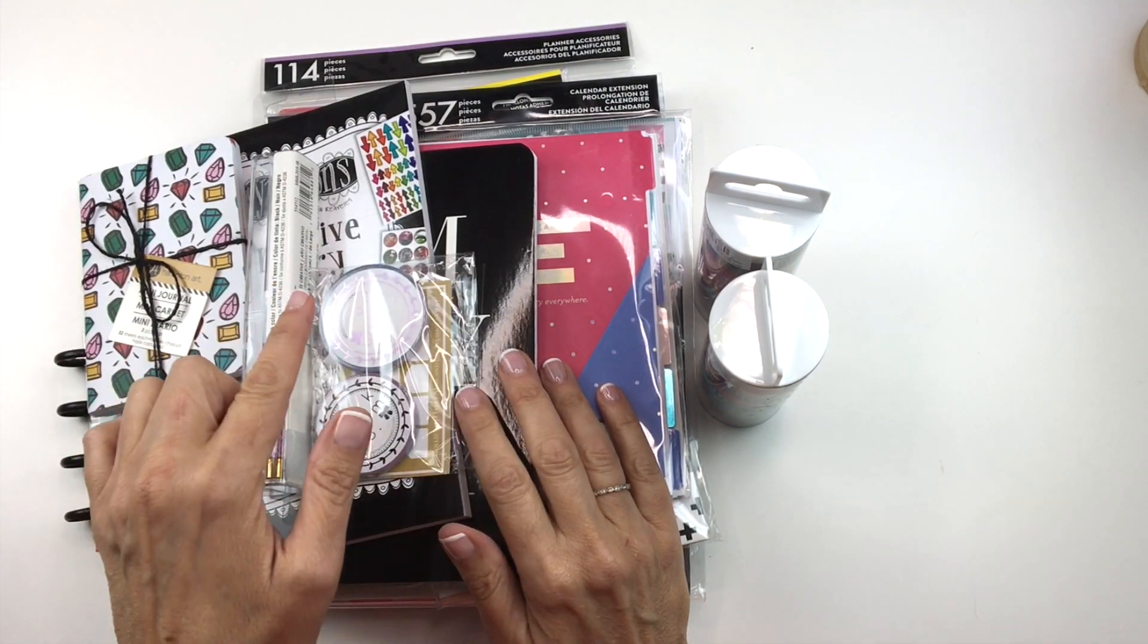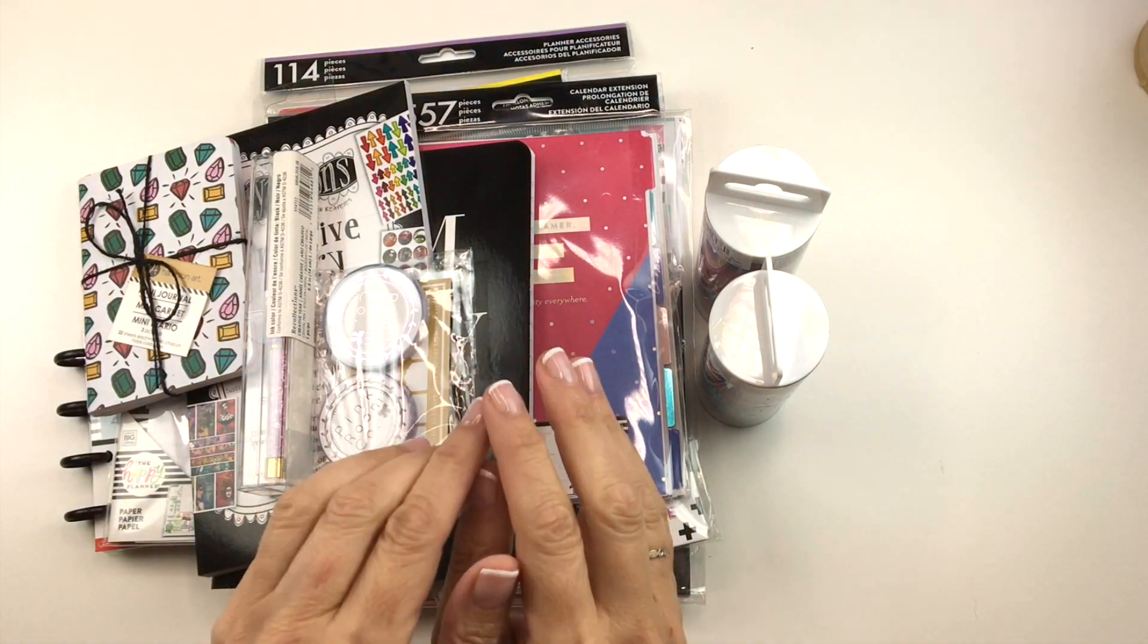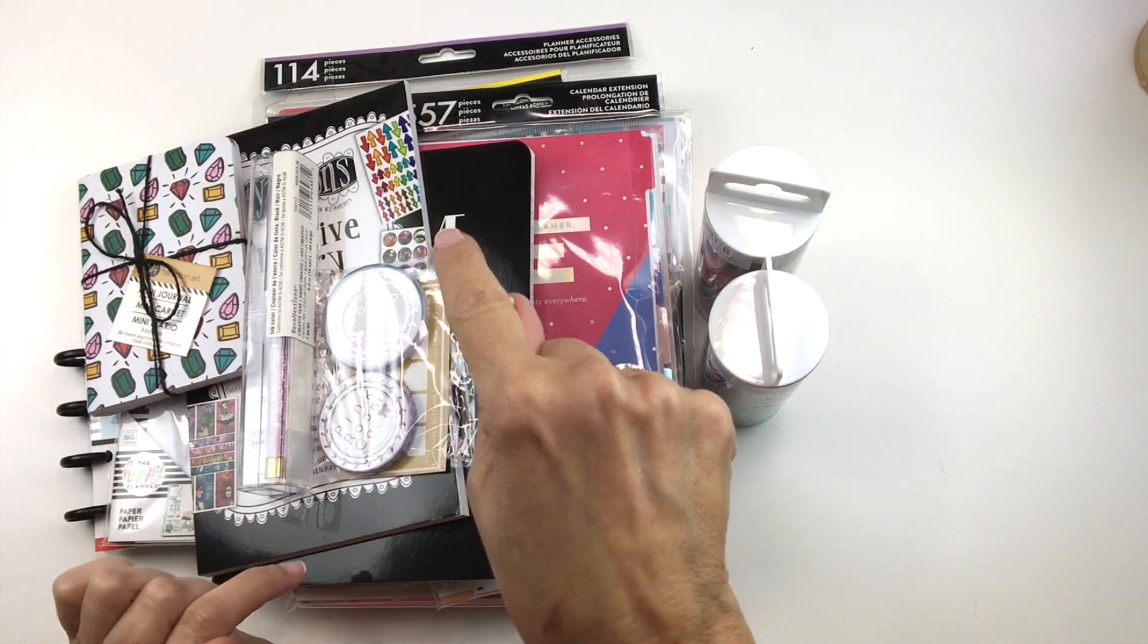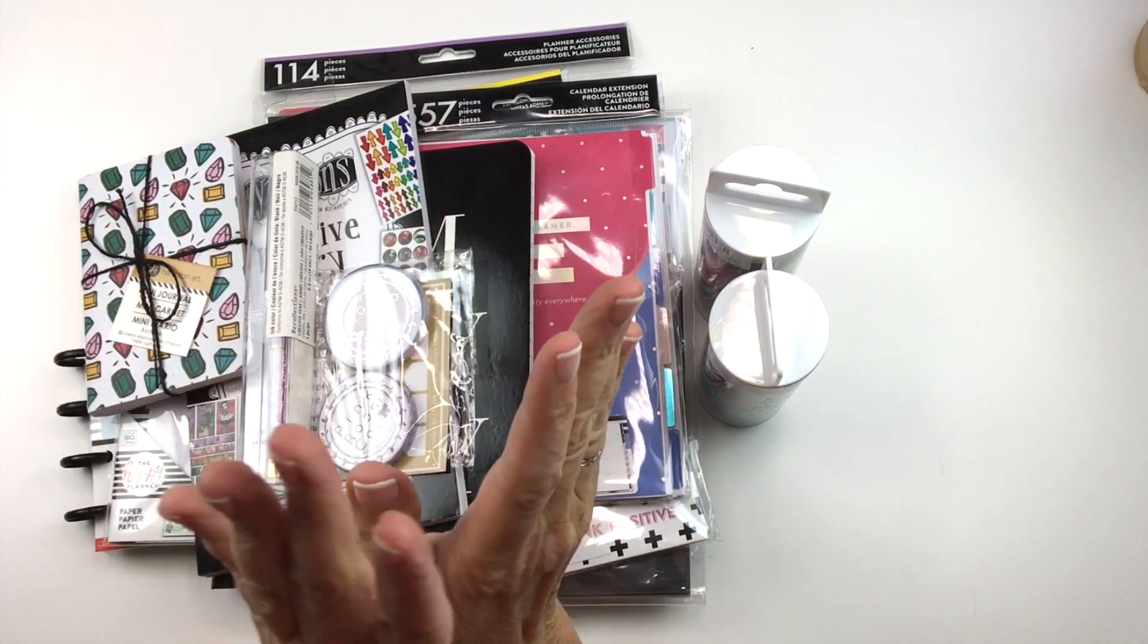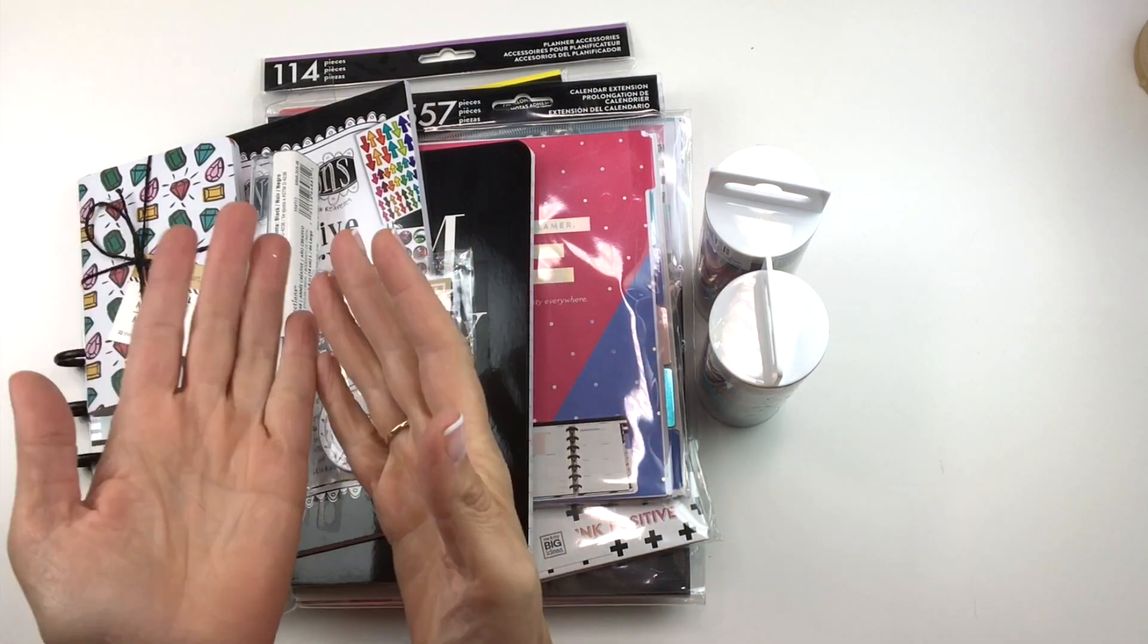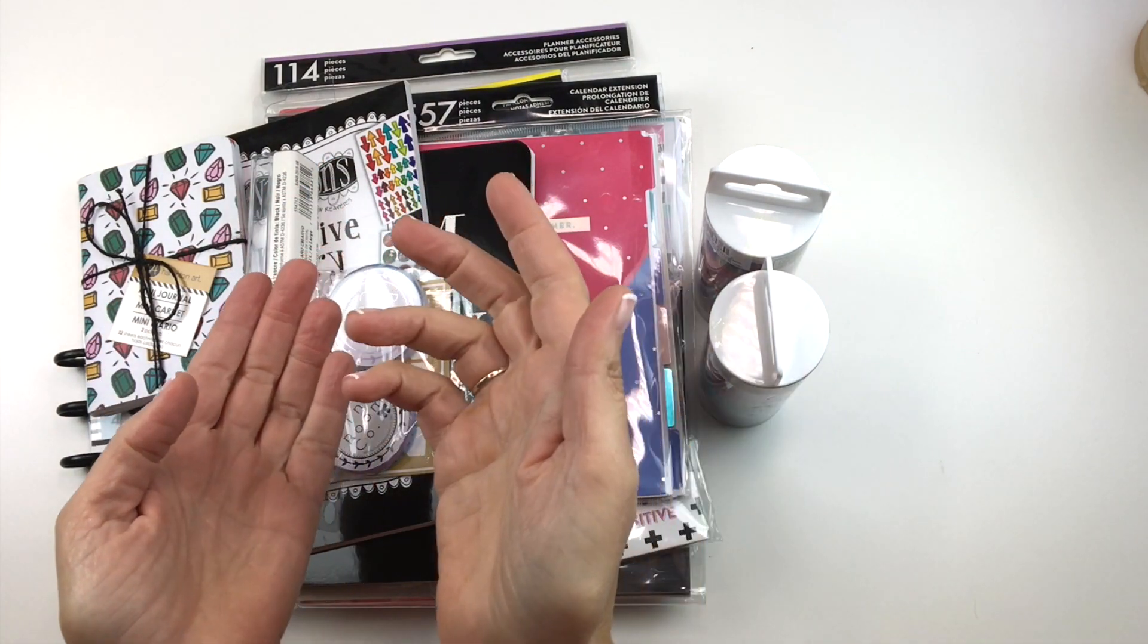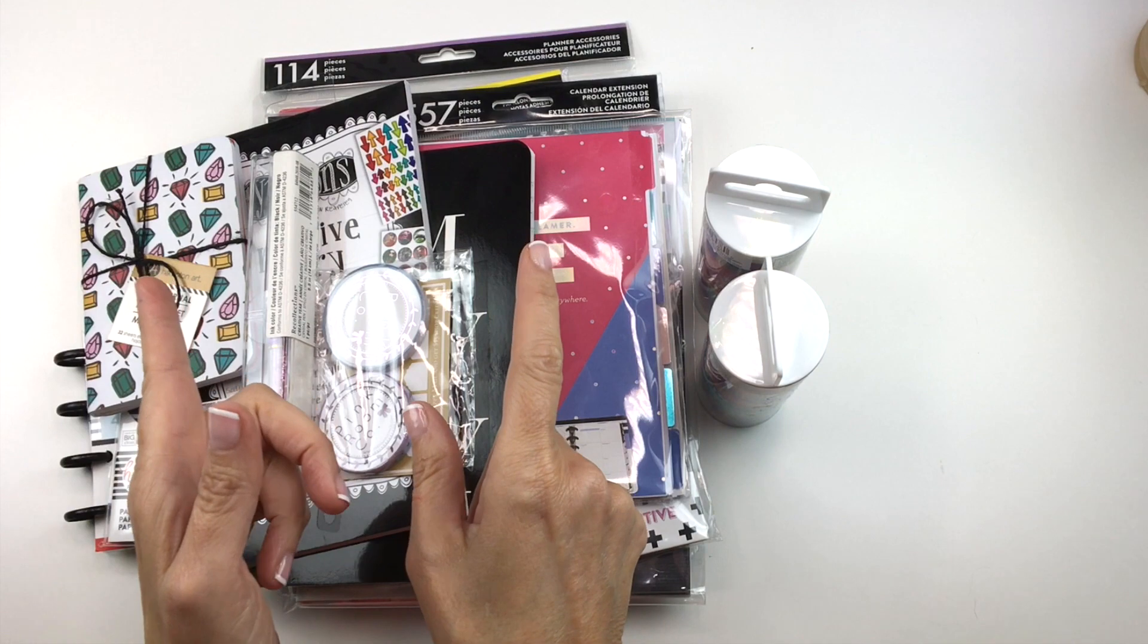And then go to my Instagram. And all these rules are going to be in the description box below. So if you forget what to do, just go into the description box, take a look, read it, and then just follow it. Basically, you just have to be following me on Instagram at planningwithbumble, subscribed on YouTube, and then comment in both places.